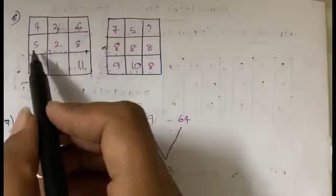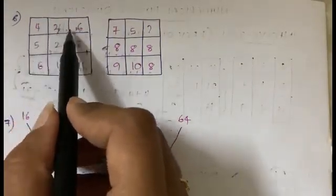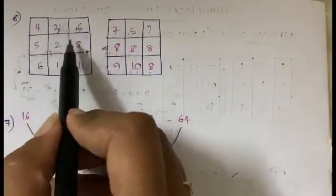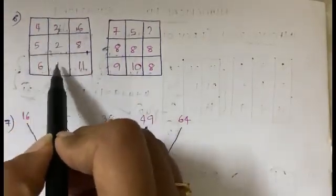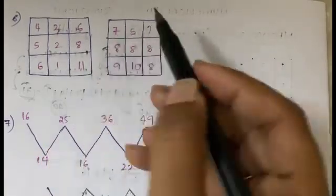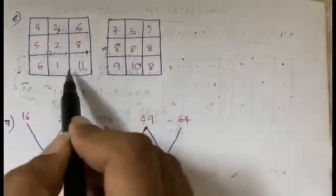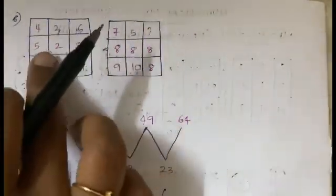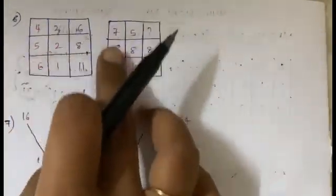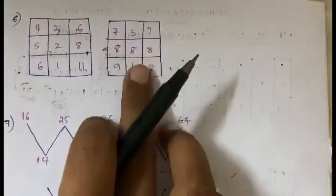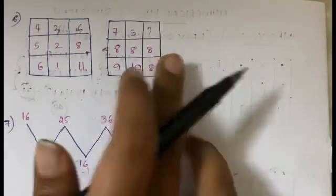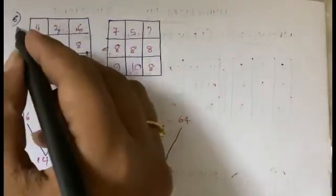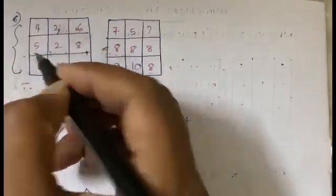Let us see the sixth problem. We have: 4, 2, 6 | 5, 2, 8 | 6, 1, 11. In this type of question, when you're given two sets, whatever logic is applied to the first set, the same logic works for the second set as well. So first try to figure out what logic is being applied here.